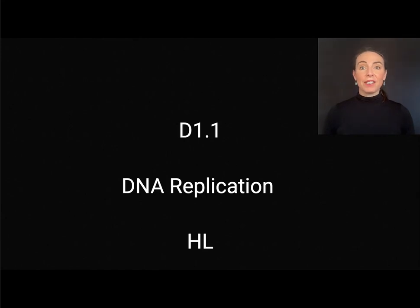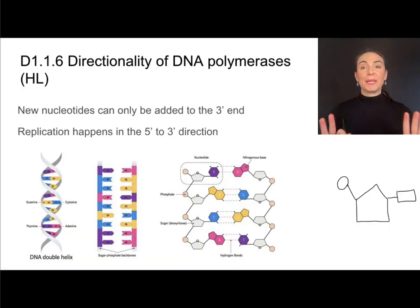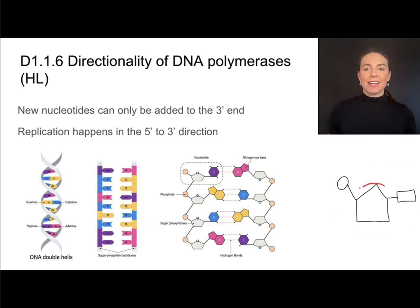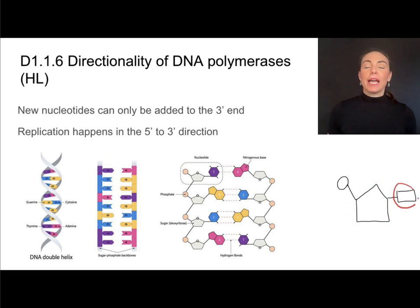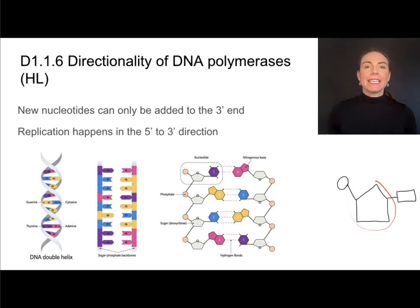This is the video for the higher-level content from D1.1 on DNA replication. Let's do a quick review of nucleotide structure. A nucleotide consists of deoxyribose (if we're talking about DNA) or ribose (if talking about RNA), a nitrogenous base, and a phosphate group. This deoxyribose is a 5-carbon sugar, and the carbons are numbered 1, 2, 3, 4, and 5.